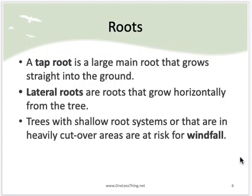A tap root is the large main root that grows straight into the ground. Lateral roots are roots that grow horizontally from the tree. Trees with shallow root systems or that are in heavily cutover areas are at risk for windfall. If you've ever been camping and seen a tree fallen across the road with the giant root system exposed — it looks like it was literally torn from the ground — that is a product of windfall.